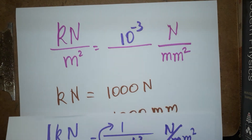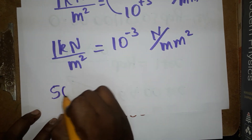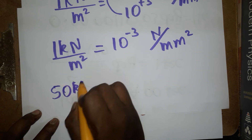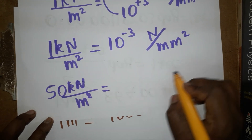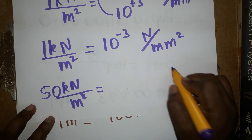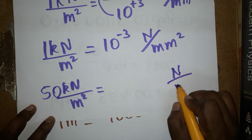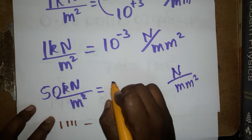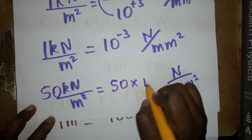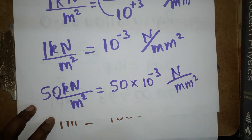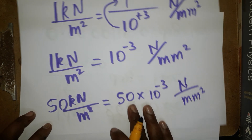For example, 50 kilonewton per meter square — how much is that in newton per millimeter square? It is very simple: 50 multiplied by ten to the power minus three newton per millimeter square.